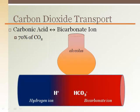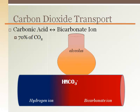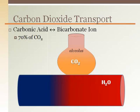In the lungs, the hydrogen ion and the bicarbonate ion recombine to form carbonic acid. Carbonic acid immediately converts back to carbon dioxide and water. The carbon dioxide then diffuses into the alveoli to be removed from the body.